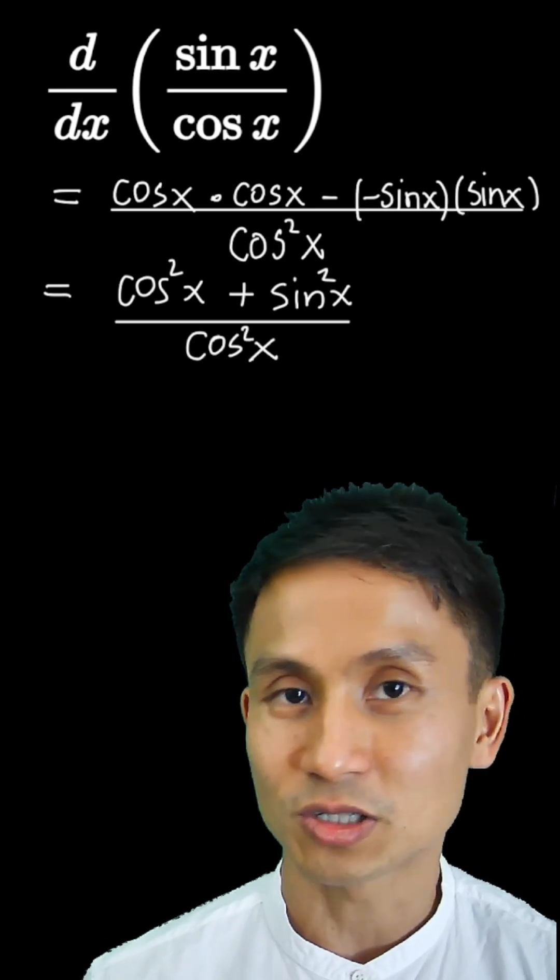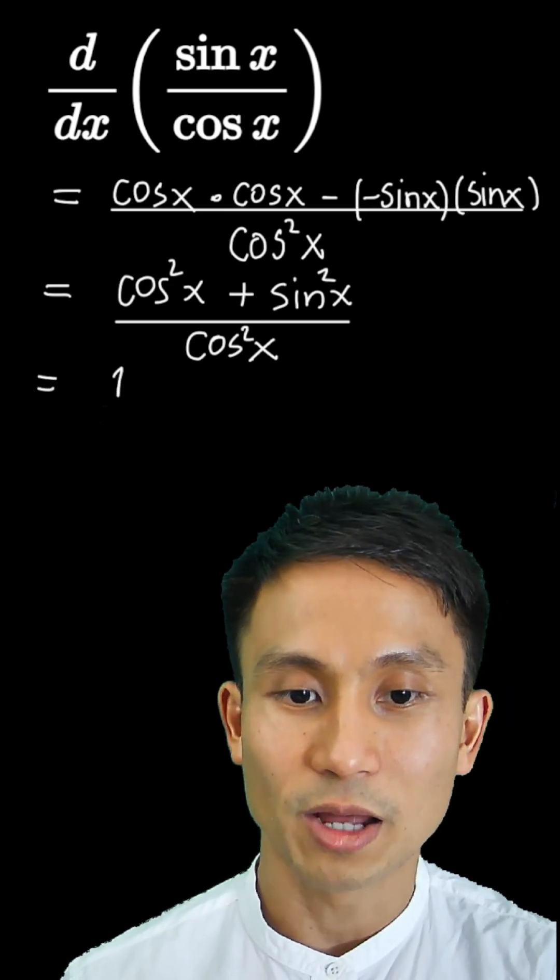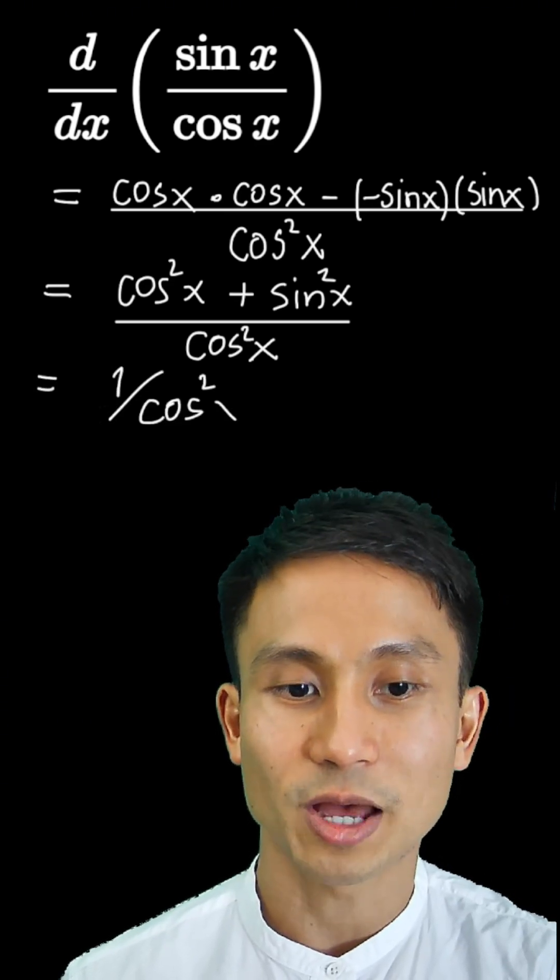Sine squared x plus cos squared x would give you the identity of one. So here we can rewrite as one divided by cos squared x.